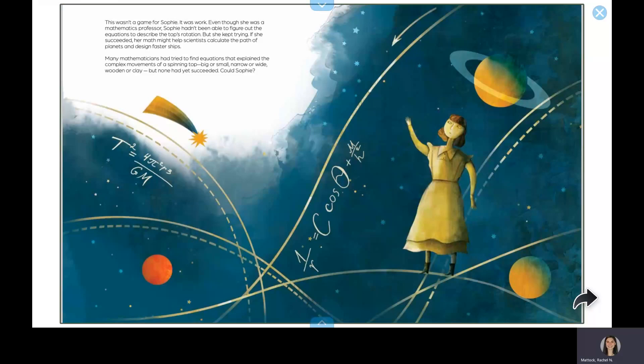This wasn't a game for Sophie. It was work. Even though she was a mathematics professor, Sophie hadn't been able to figure out the equations to describe the top's rotation, but she kept trying. If she succeeded, her math might help scientists calculate the path of planets and design faster ships.